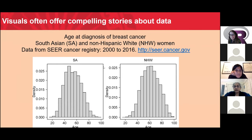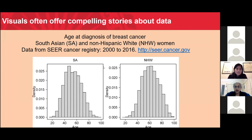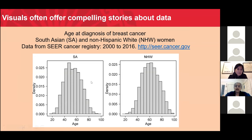Recently I was studying breast cancer in South Asian women and non-Hispanic white women living in the United States, using data from the National Cancer Institute's SEER cancer registry. We wanted to examine the characteristics of breast cancer in South Asian women versus non-Hispanic white women — characteristics such as age at diagnosis, tumor stage, and so on. To look at age at diagnosis, we initially looked at histograms of age at diagnosis in the two populations.